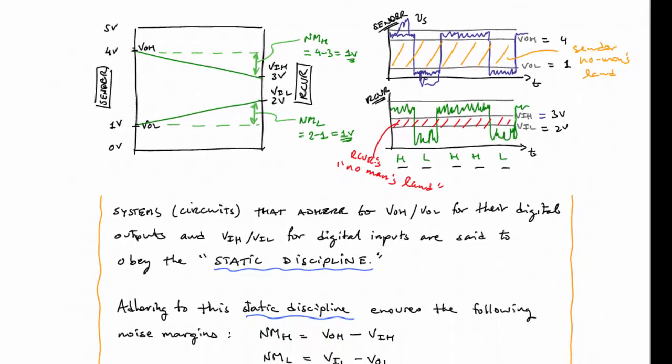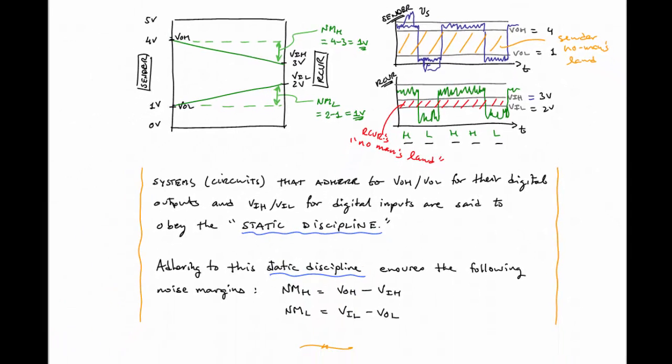So, in conclusion, we say systems or circuits that adhere to the VO high slash VO low for their digital outputs, the senders, and VI high slash VI low for their digital inputs, receivers, are said to obey the static discipline. And when you adhere to the static discipline, you ensure the following noise margins. Noise margin high of VO high minus VI high, and a noise margin low of VI low minus VO low.